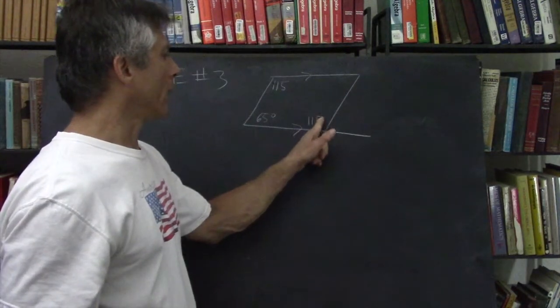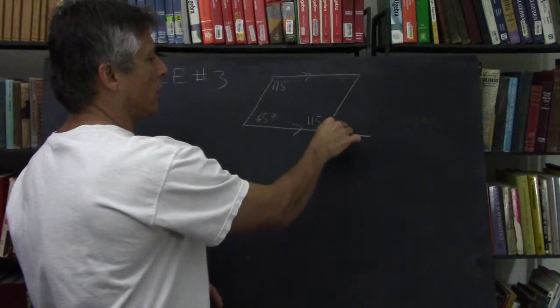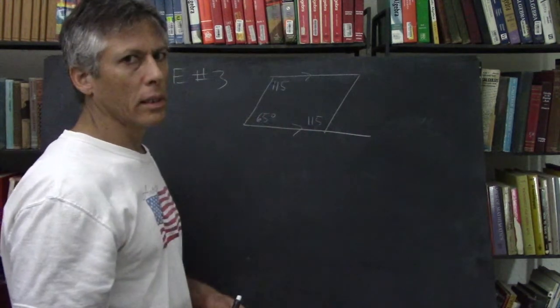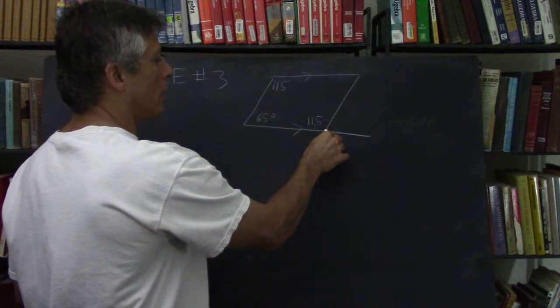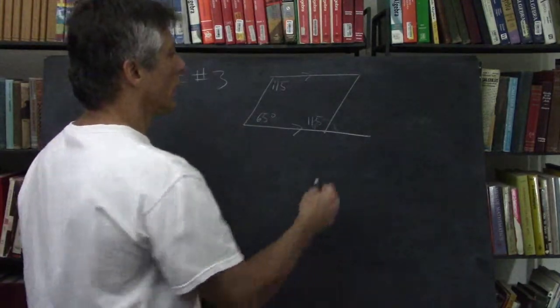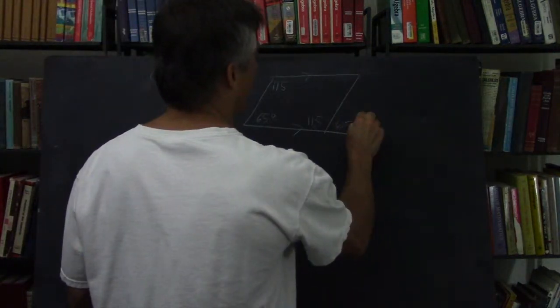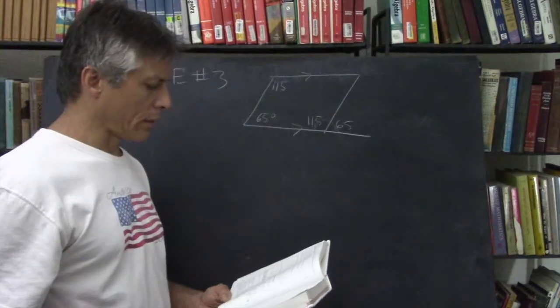Now if these are supplementary because they're adjacent angles around a point on a straight line, you're on one side of a straight line around a point, and the angles must add up to 180. So that's 65. Okay, so that's number 3.